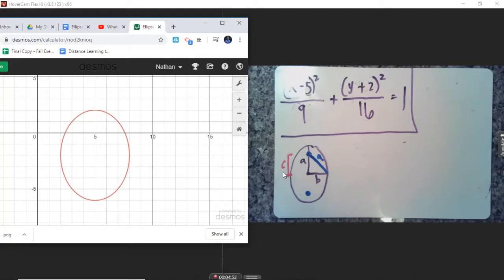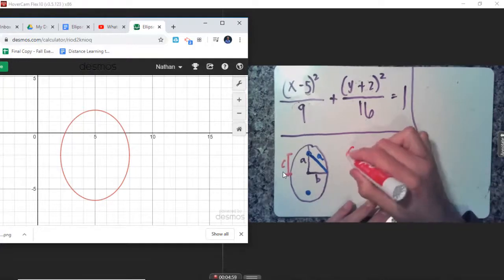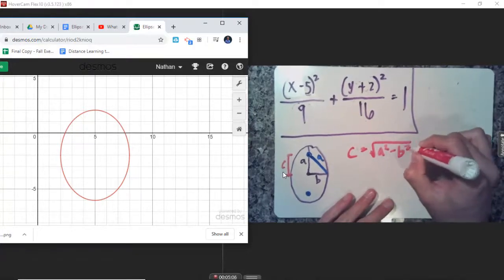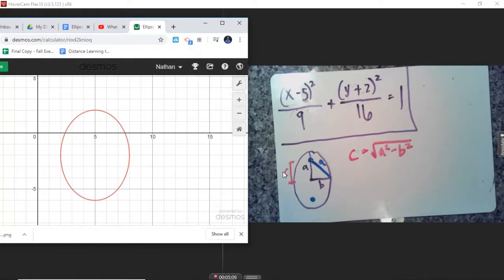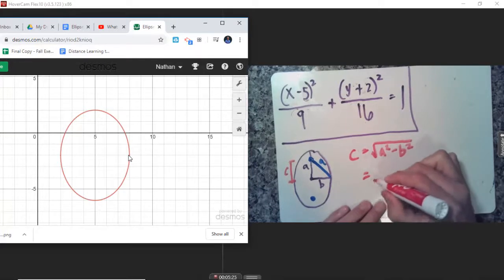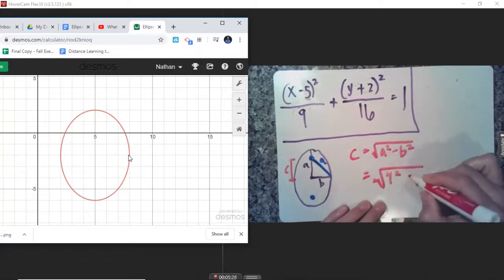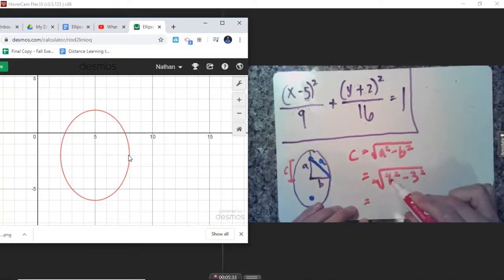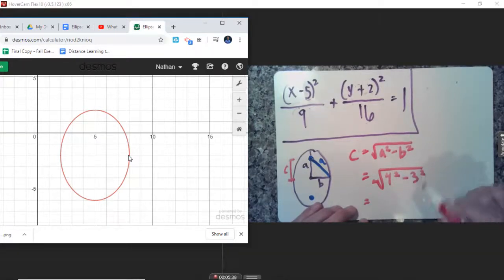Now, in that second video, I just gave you the equation for C. Again, it comes from the Pythagorean Theorem, but here it is. So C is equal to the square root of A squared minus B squared. Now, you know A and you know B. A was 4, this length right here. B is 3, that length right there. So let's go ahead and find C. This is equal to the square root, A was 4, 4 squared minus 3 squared. That's going to be 4 squared, right? 16, 16 minus 9.